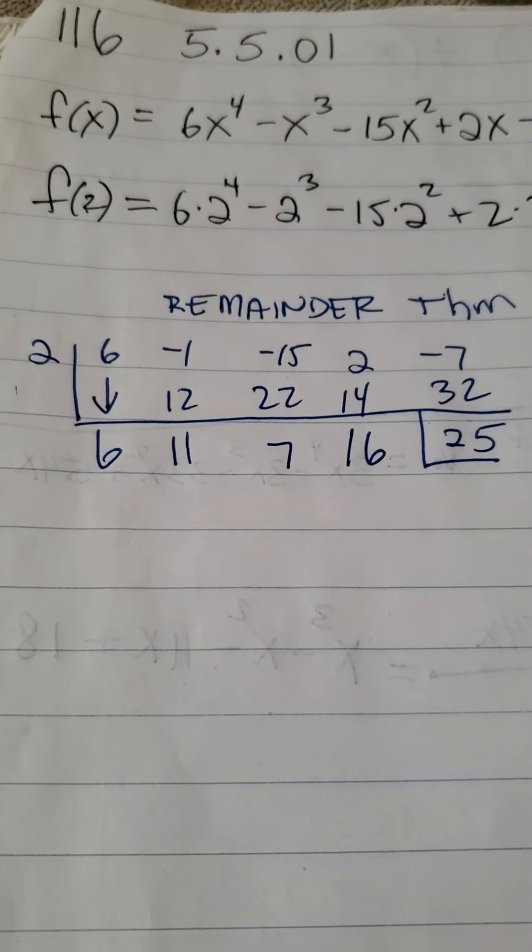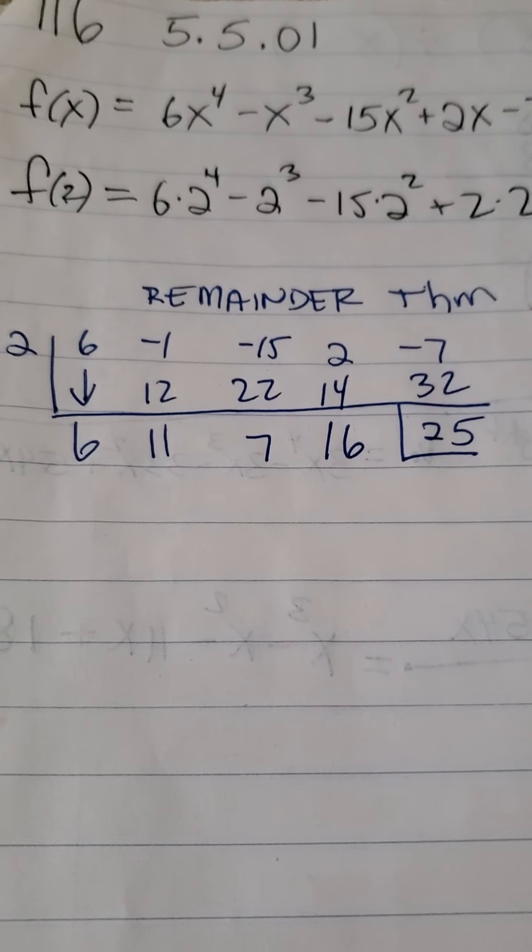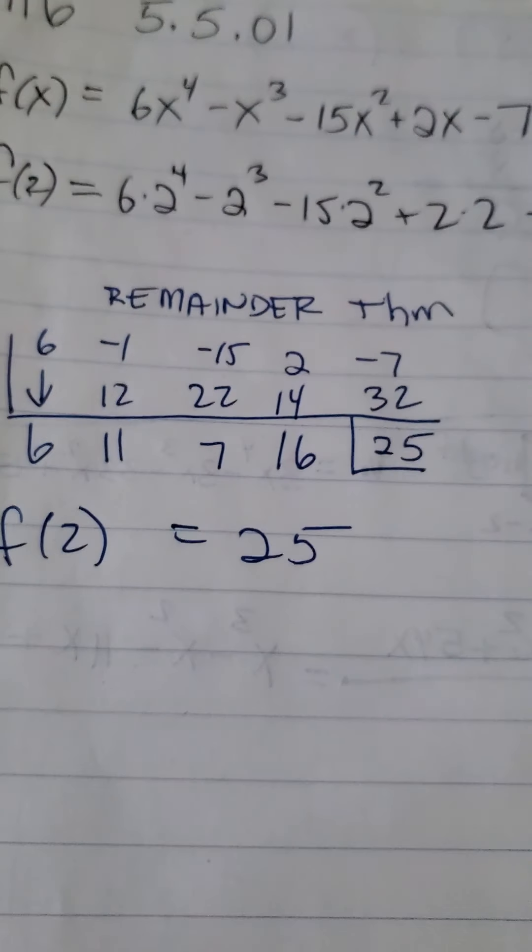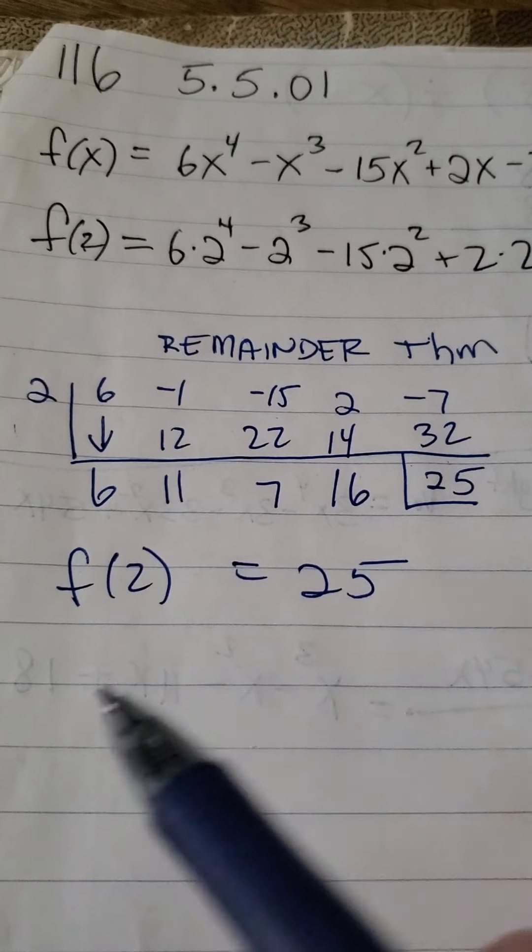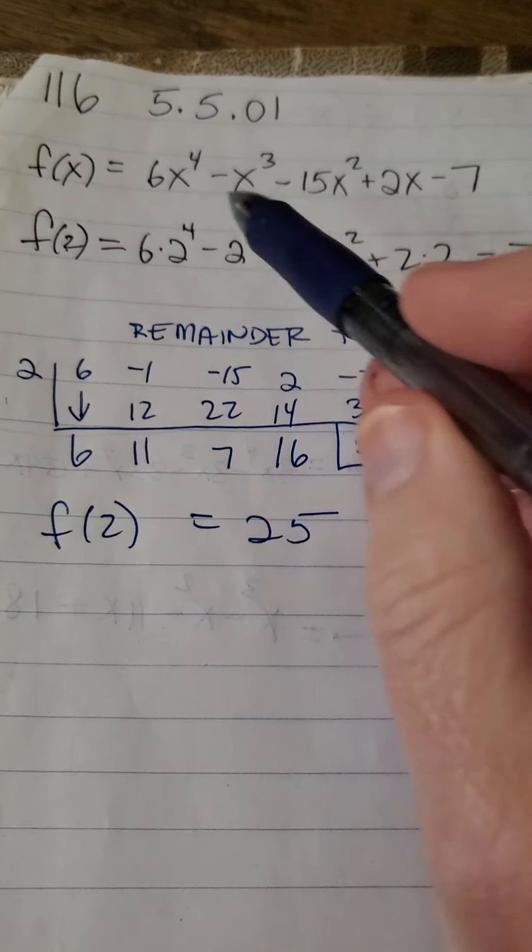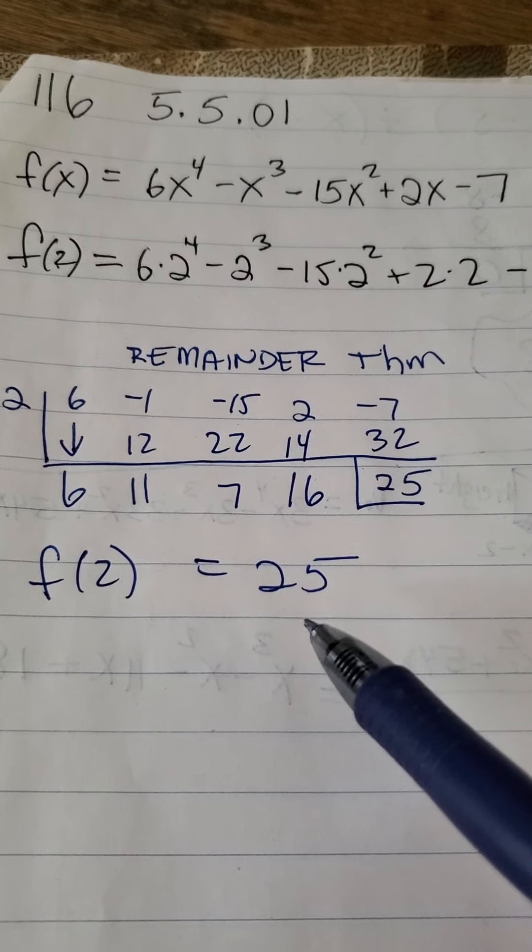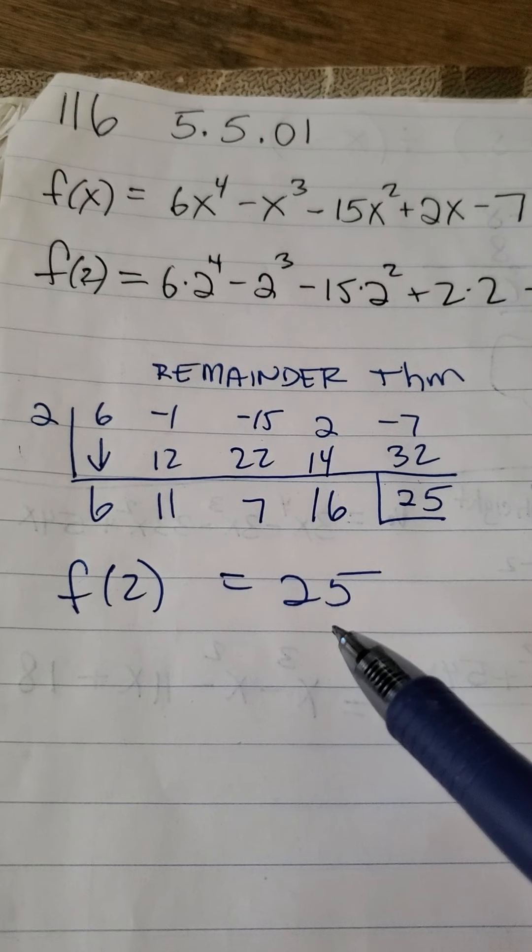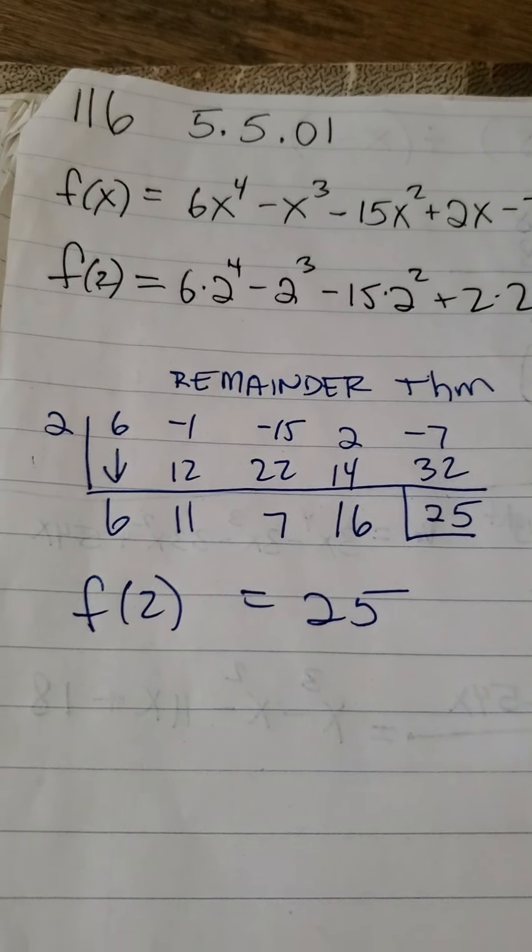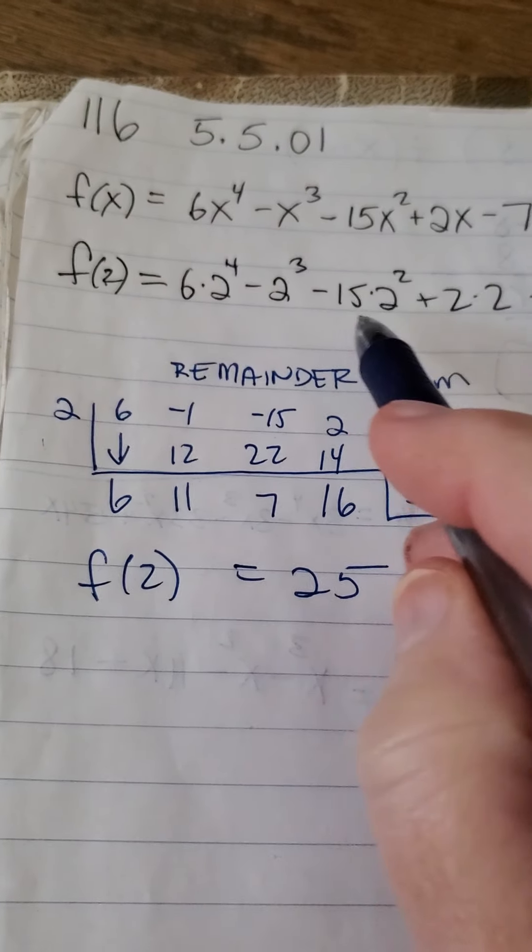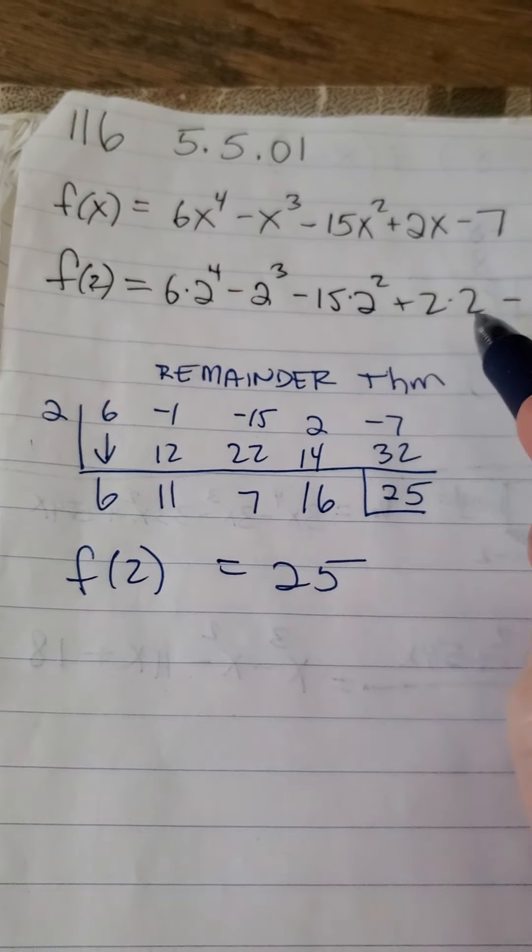That number 25 is my answer, meaning to say if I would take 2 and stick it into the polynomial, into that big polynomial, I would wind up getting 25. And that is to say that if I would crunch all these numbers out, I would eventually get 25.